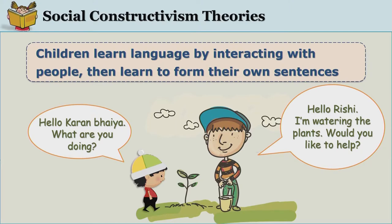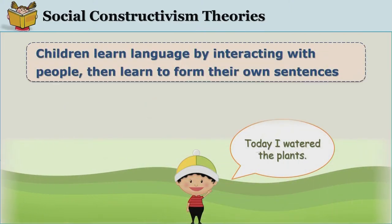it happens at an interpersonal level first and then at an intrapersonal level. As you can see in the illustration, the child comes to learn the use of certain words — such as watering of the plants — from others, and then learns to use them in their own sentences. Such a concept, in which children learn things by interaction with others, especially those who know more — whom we call more knowledgeable others — is called social constructivism.